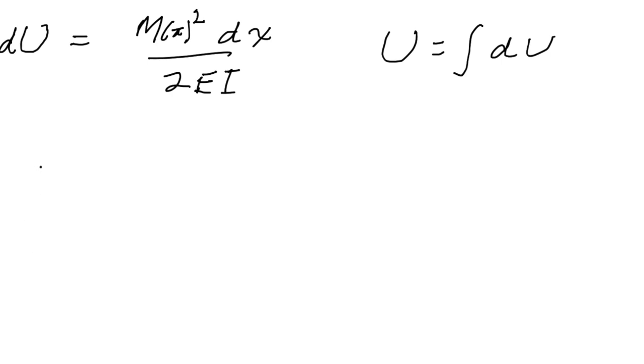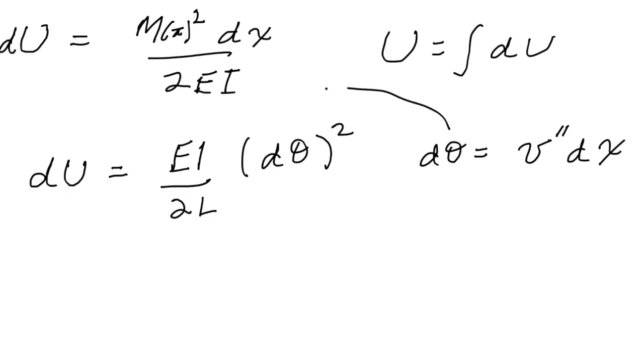Likewise, if we want to eliminate M and think about rotations, and further eliminate rotations and think about deflections, we have EI over 2dx, and then we have d theta squared. But d theta, if you recall from a previous lecture, is just v double prime dx. So we're going to plug this in to get the most important equation of the lecture, which relates strain energy directly to the deflection of the beam.